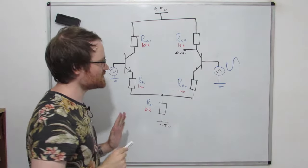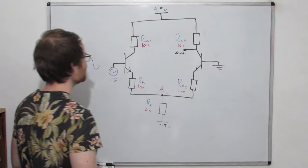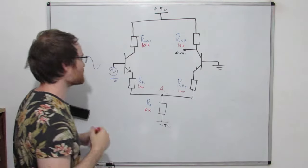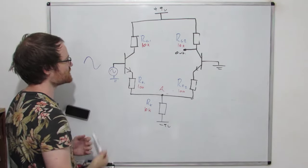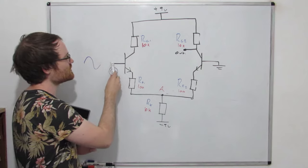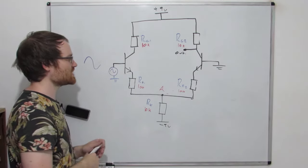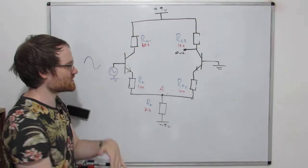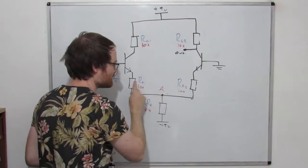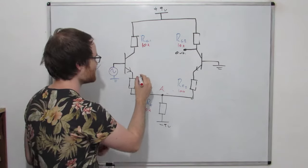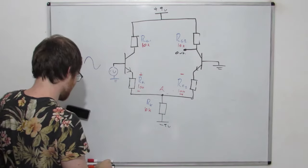The best way to explain this is to take it one side at a time. I'm going to ground one input and apply our signal to the other input. What does it mean to apply the signal to this base? We're applying the signal between the base and ground. The loop goes through the transistor, through this resistor, through this resistor to ground, and back again. So essentially, if we can ignore these parts for now, what's happening is we're putting this signal through a voltage divider made of these two resistors.